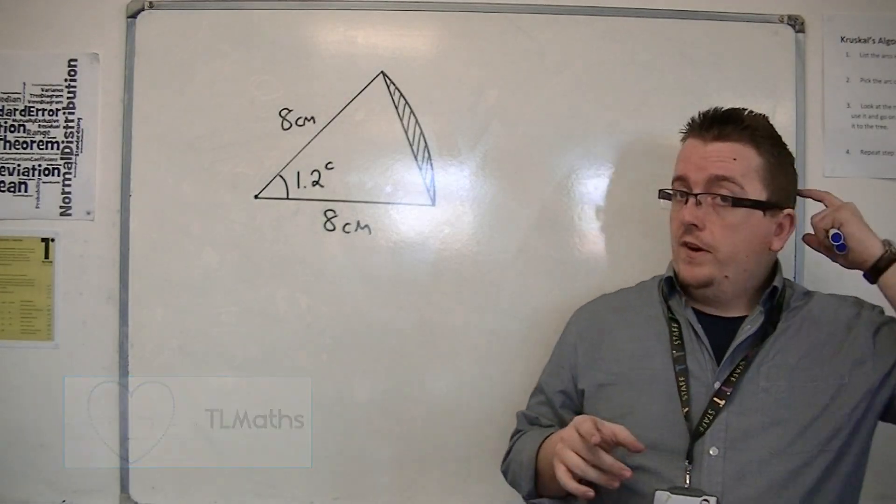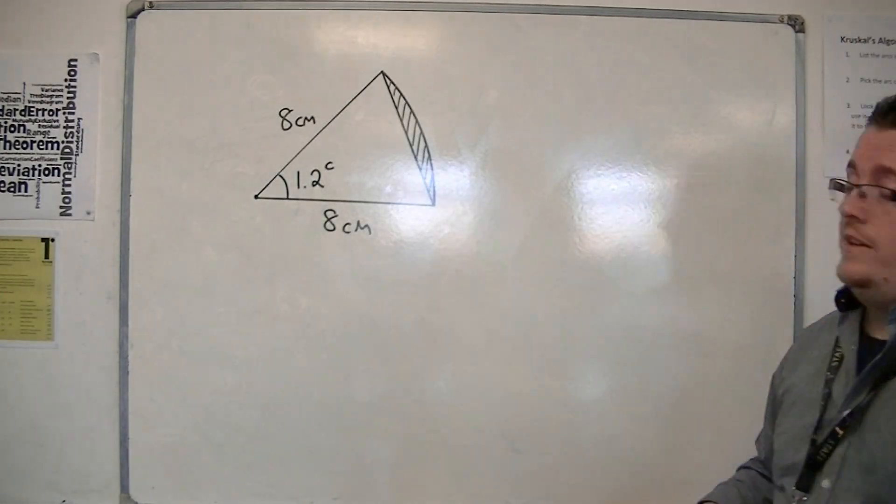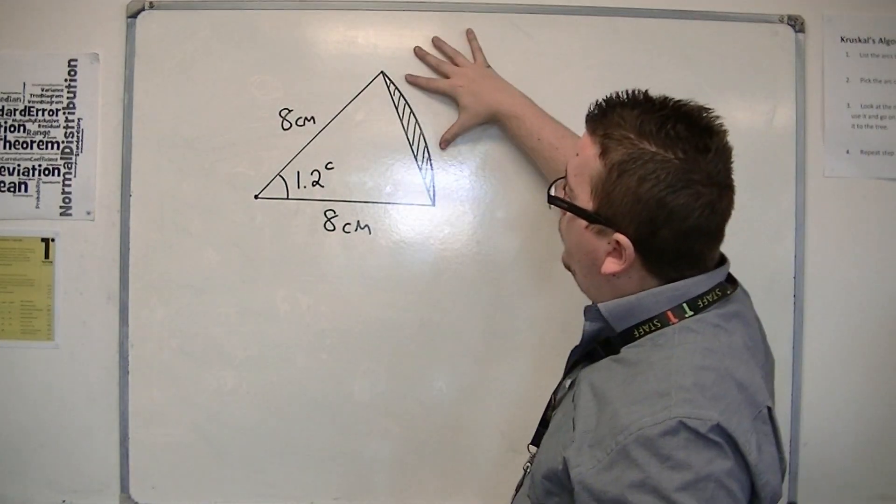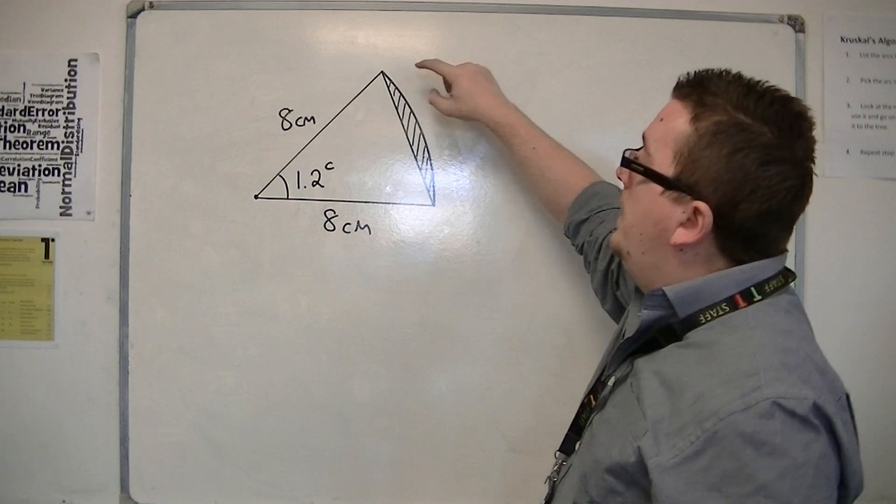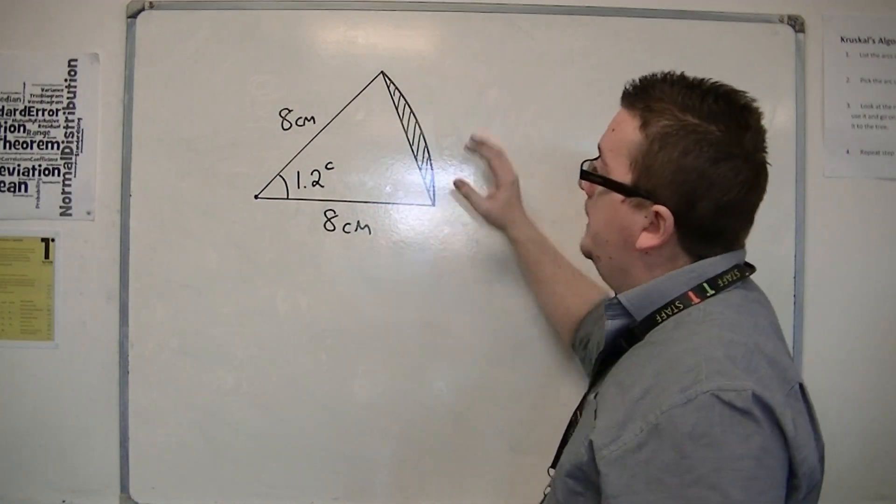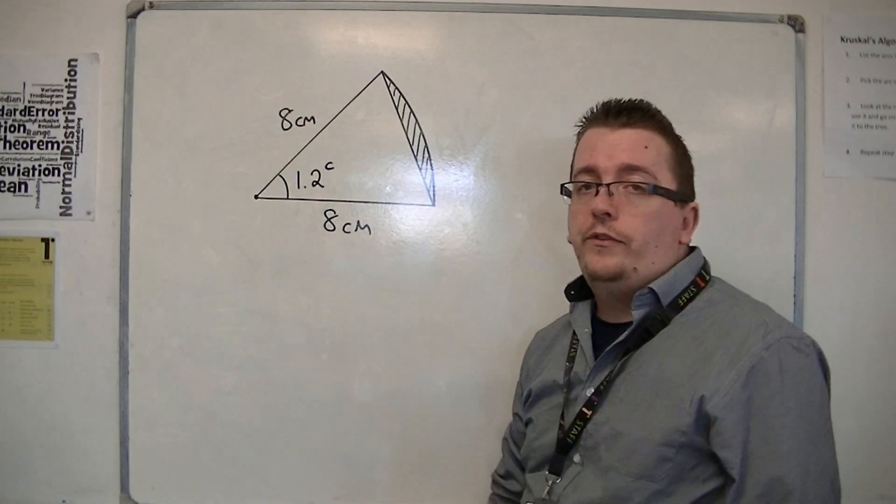So let's say I needed to find the area of this shaded section. You can see that it is part of the sector. I have a sector represented by the curved part, and then you've got this triangle inside.